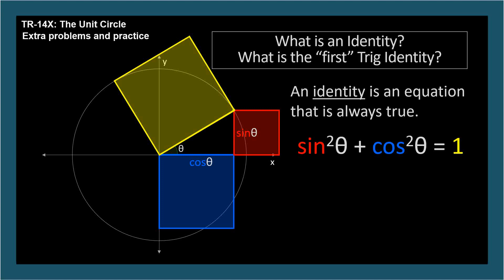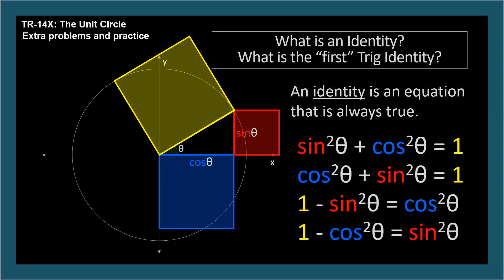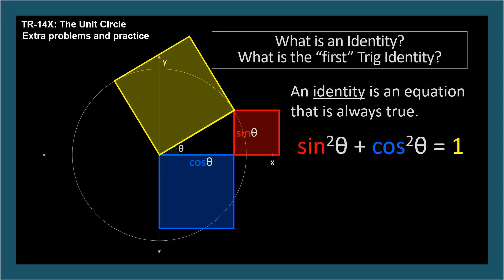Of course, this can be rewritten as cosine squared theta plus sine squared theta equals 1. Same thing. These also imply that 1 minus sine squared theta equals cosine squared theta and 1 minus cosine squared theta equals sine squared theta. These are all still the same equation written different ways. So please don't think that this is four things to memorize. Just know sine squared theta plus cosine squared theta equals 1.